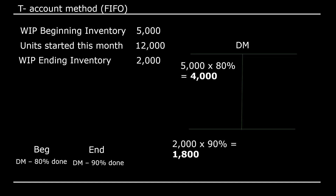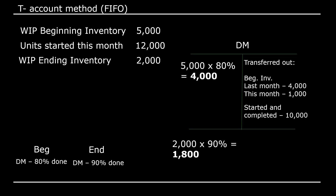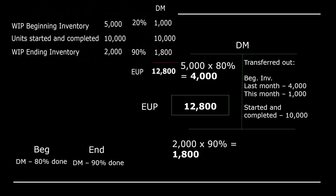Now we know beginning (4,000) and ending (1,800). We also know the transferred-out amount: beginning inventory of 5,000 is fully completed, plus started-and-completed of 10,000, for a total of 15,000 transferred out. With beginning, ending, and transferred-out known, we can work back to find the missing item — the EUP of 12,800 — which matches what we solved using the traditional method. That's the T-account method in process costing.